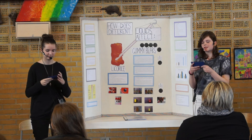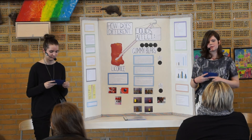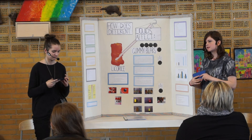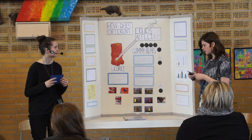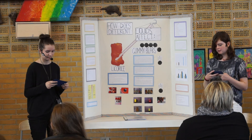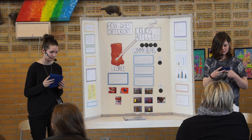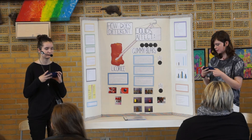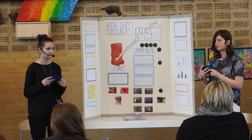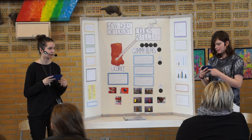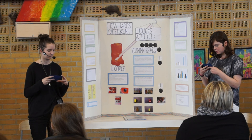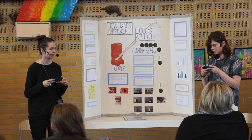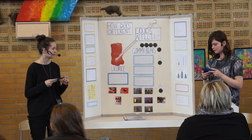Our conclusion is that we found out that gummy bears grow in all of our liquids, but the growth acts differently in terms of size, color, and softness. Licorice becomes more liquid-like and falls apart when you remove it from the liquid with a fork. We found that the pH level of the liquids does make a difference in the size and form of the gummy bears.